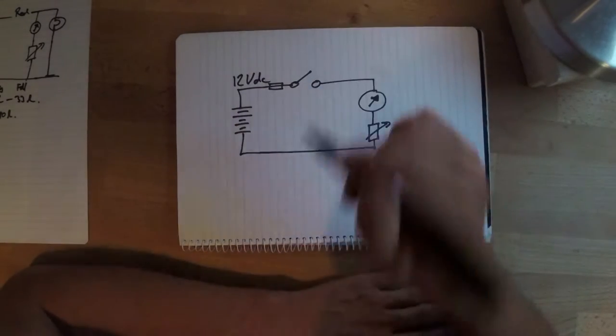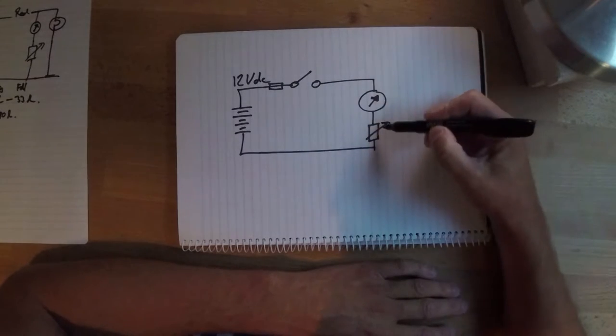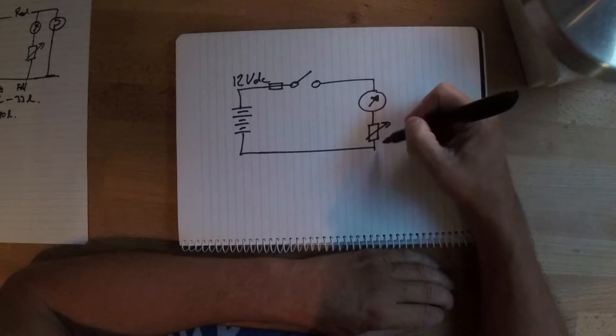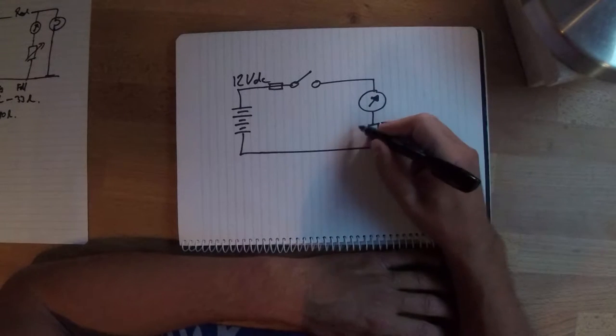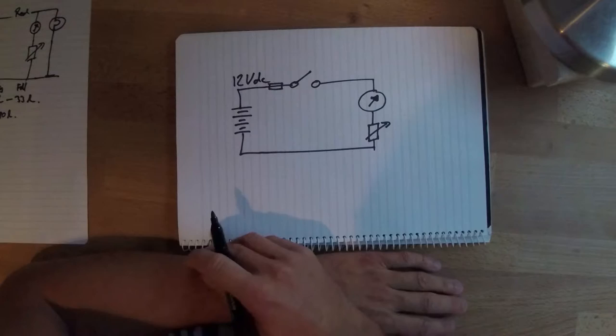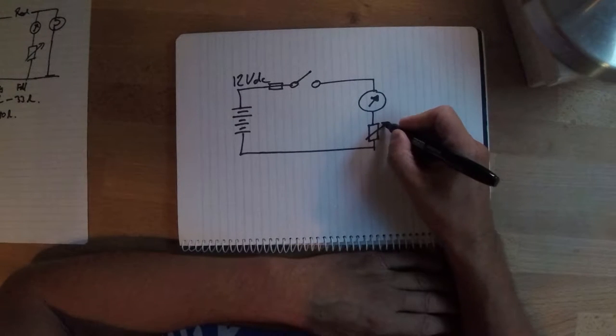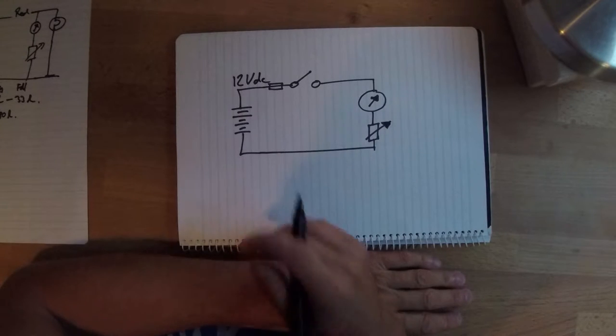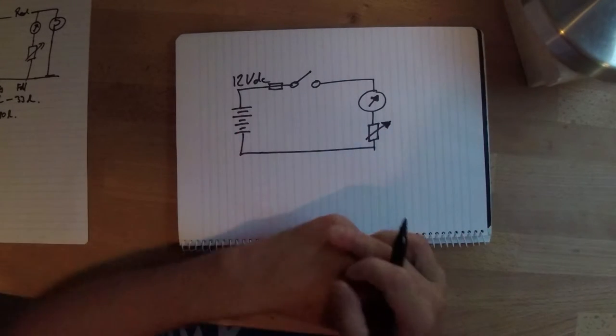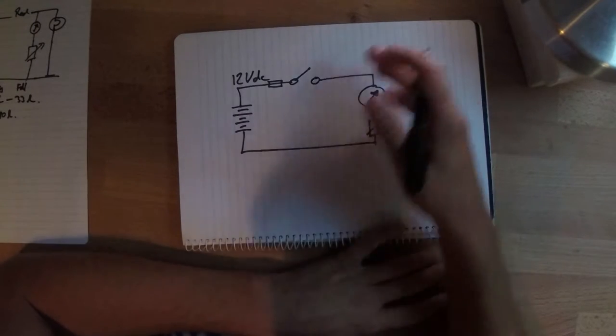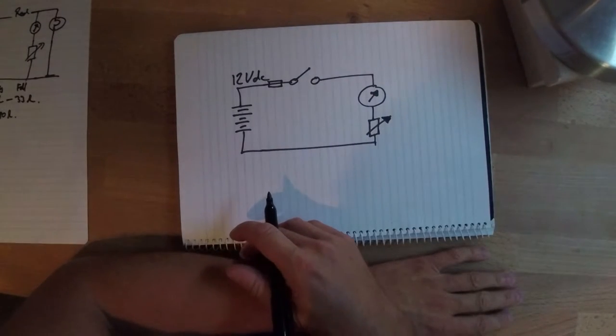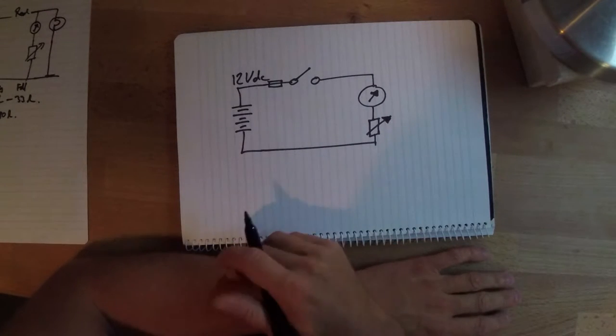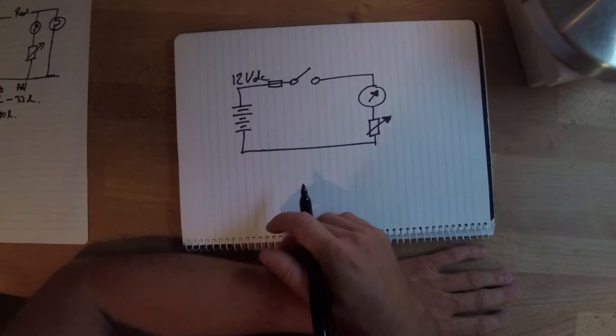So when the switch is closed, power flows through this circuit and the amount of current going through the circuit is controlled via the sender unit, the variable resistor that is the sender unit. So a really simple circuit. Not much to go wrong there, few places where you can have connection problems and the like for things to go wrong, but really quite a simple circuit.